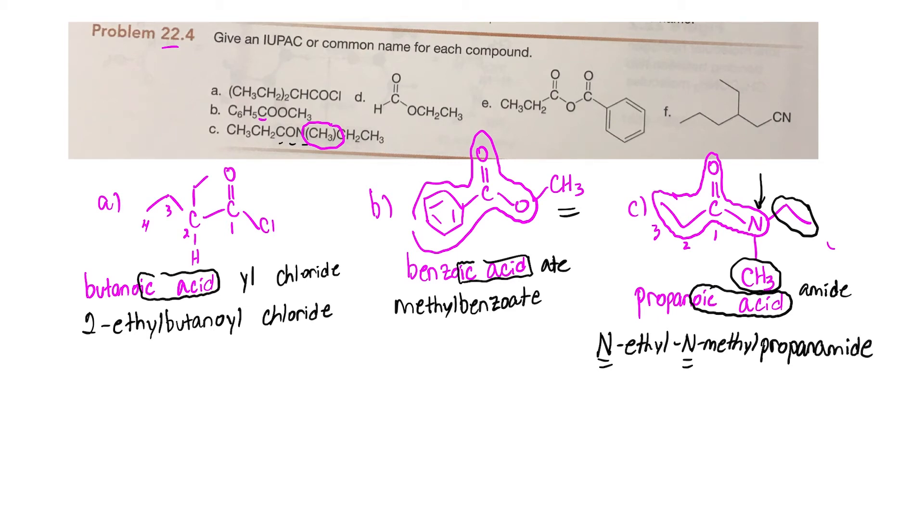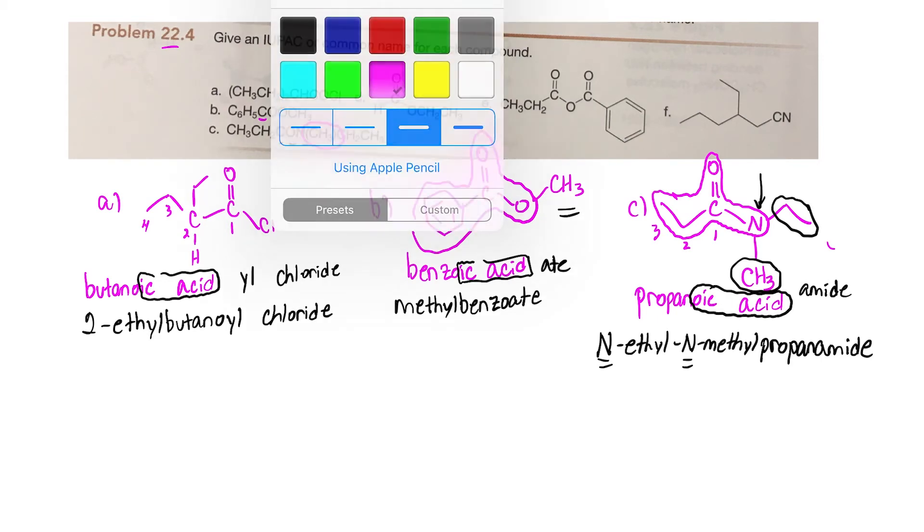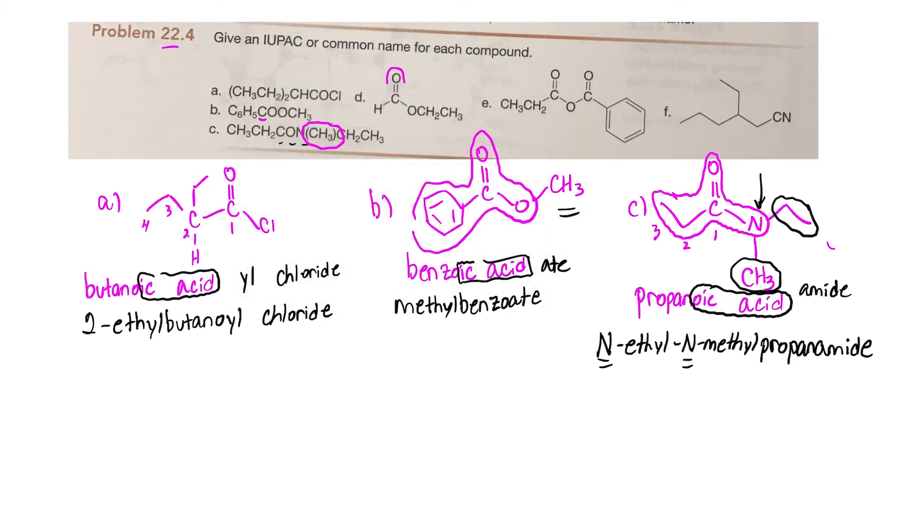In molecule D, this is nicely drawn out for us already. We can see it's a derivative of formic acid. We want to do something similar to what we did in B: drop the 'ic acid' and add 'ate.' But we want to make sure that we include this ethyl group in the name, so that's going to be ethyl formate.